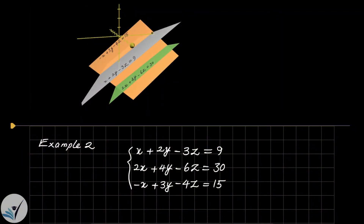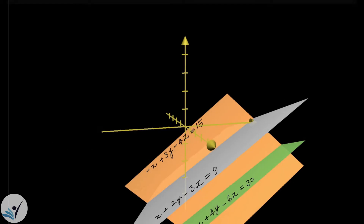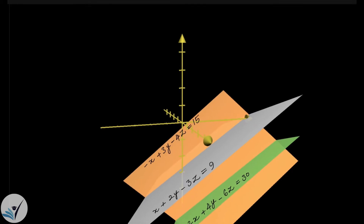Here is our second example. The only difference between this example and the previous one is the second equation. We have three planes representing those three equations — two planes are parallel to each other, and the third one intersects the other two. The intersection of the third plane with the two parallel planes produces two parallel lines. Let me highlight those lines for you.